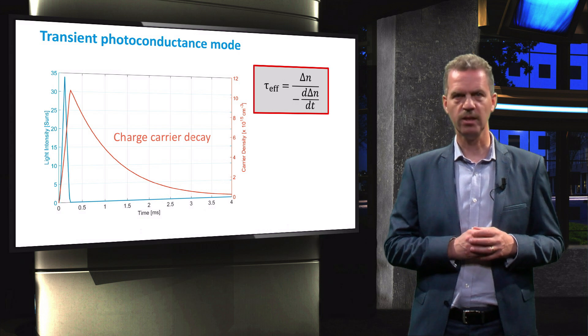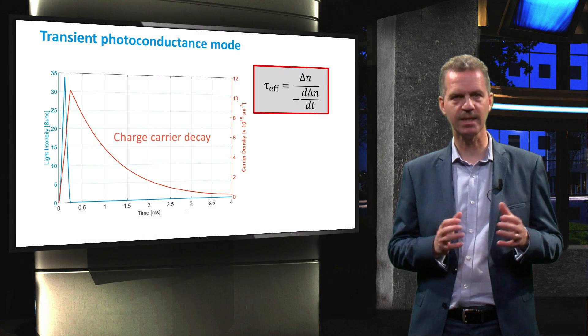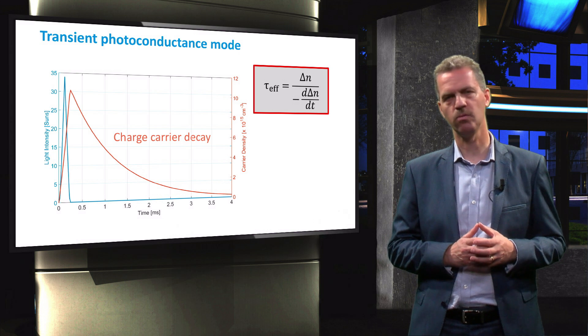The shape of the decay curve looks exponential, but is actually the result of many different recombination mechanisms acting at the same time, all having their characteristic lifetime.